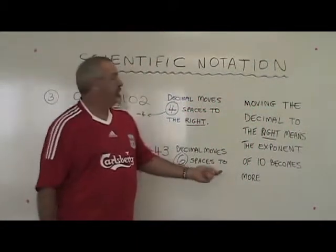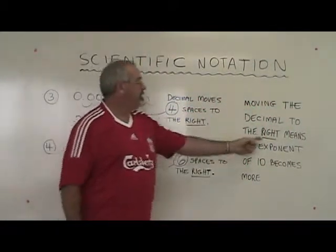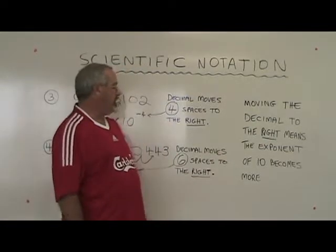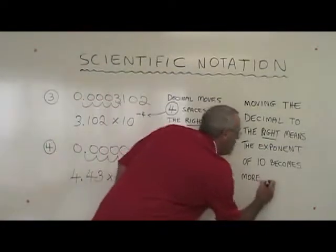The rule, therefore, is when moving the decimal to the right, the exponent of ten becomes more negative.